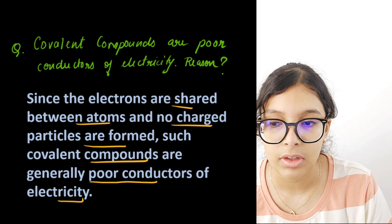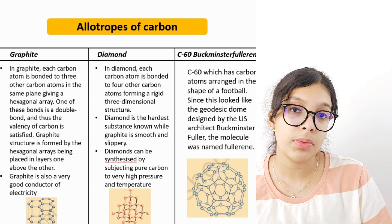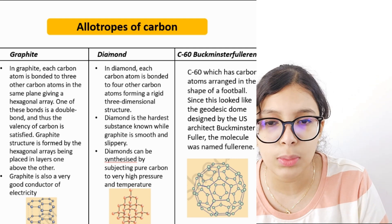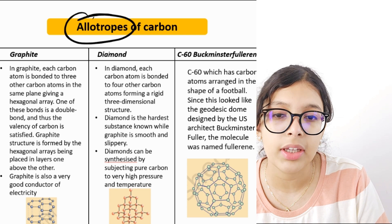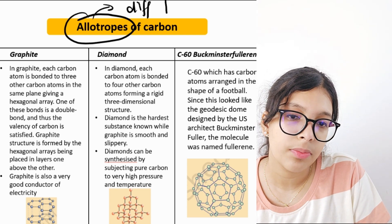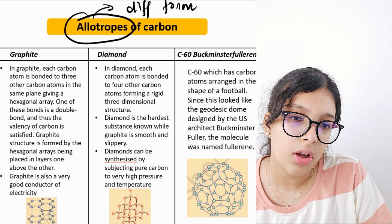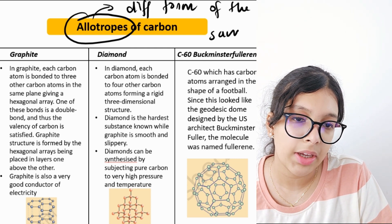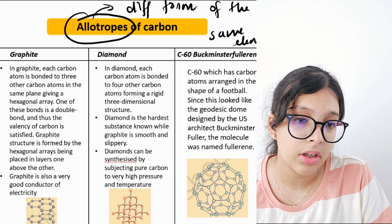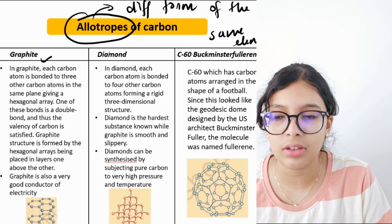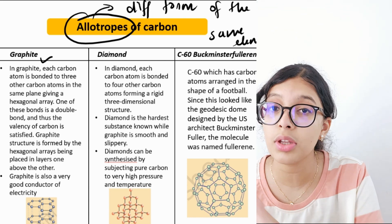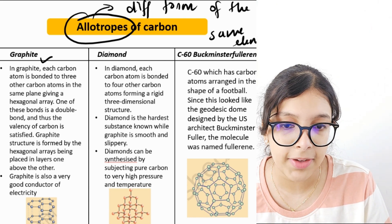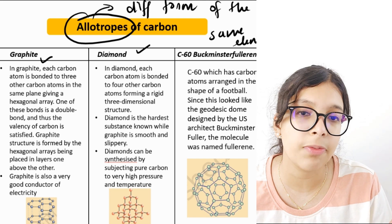Now, allotropes of carbon — different forms of the same element. Carbon has three allotropes: graphite, diamond, and buckminsterfullerene. These are given in a highlighted box in your textbook so don't ignore them as they are important.